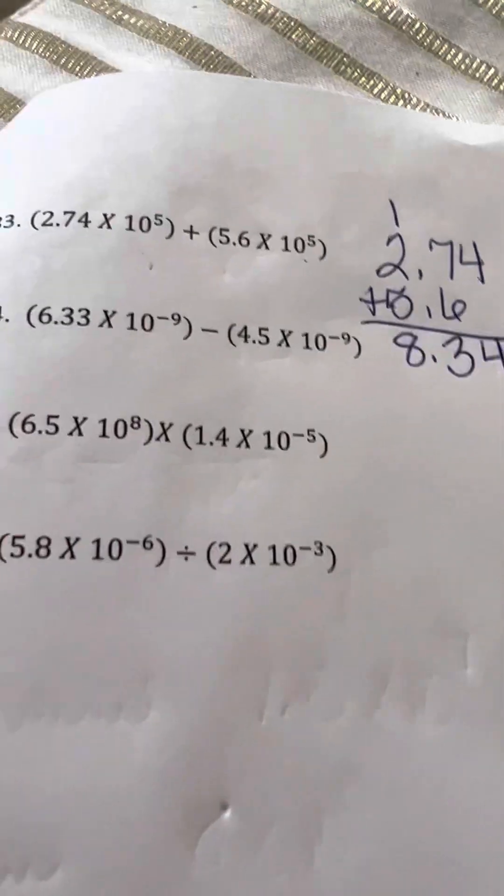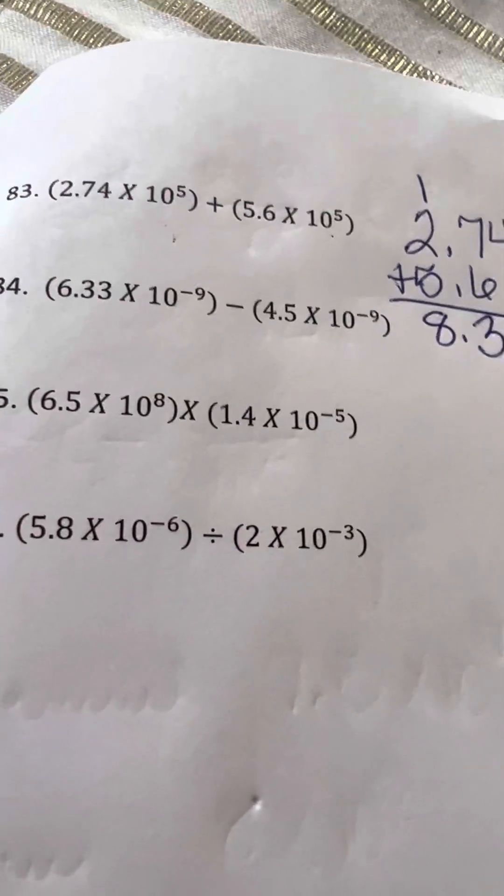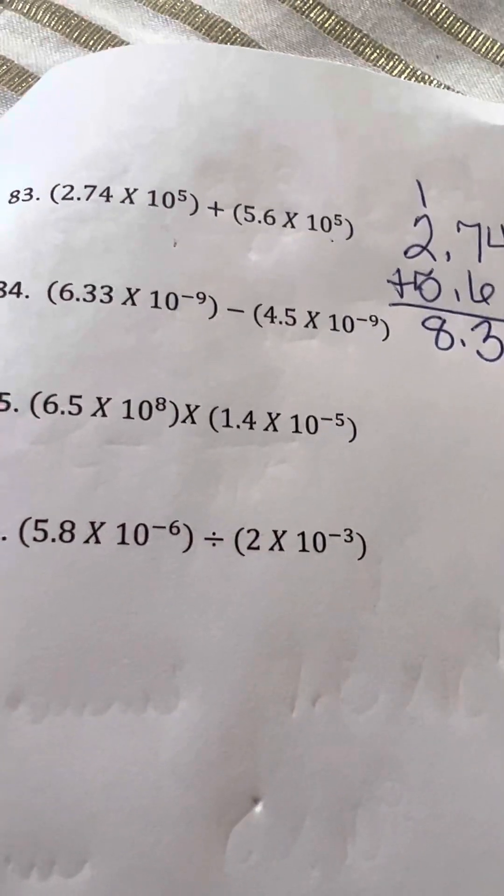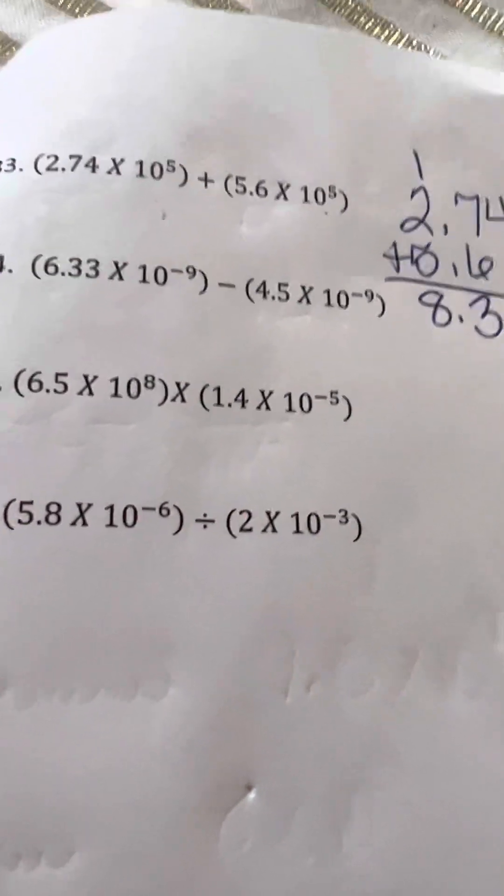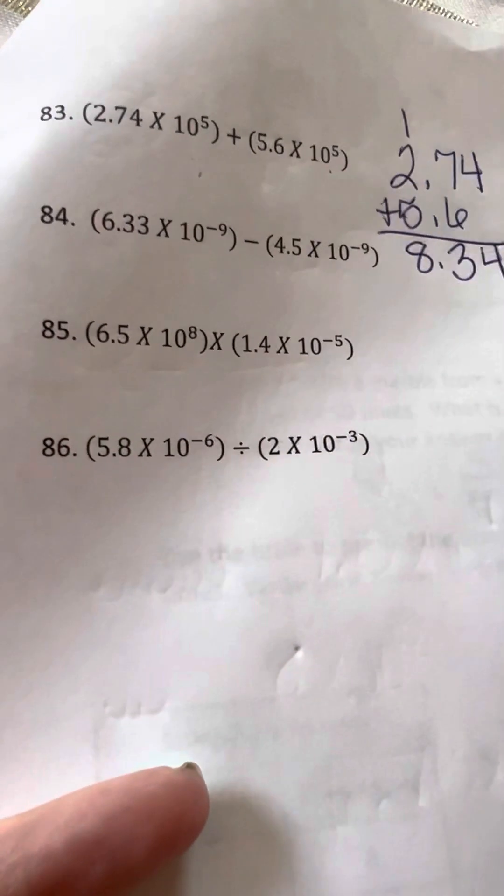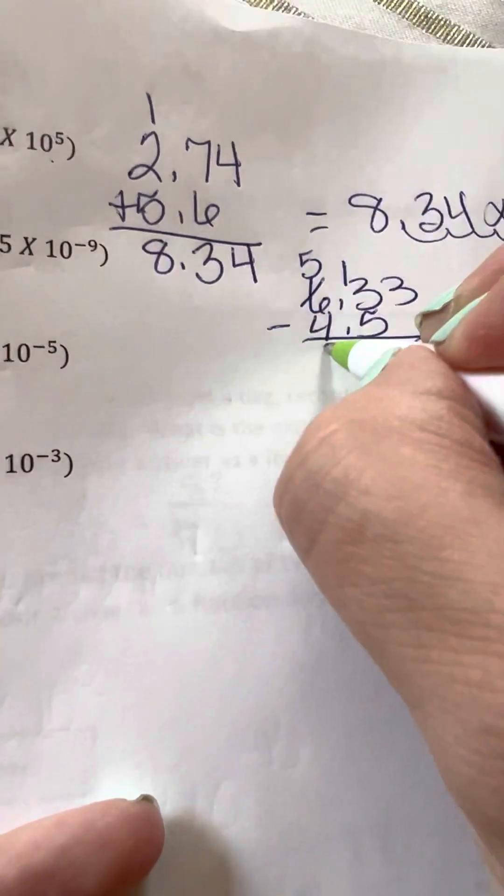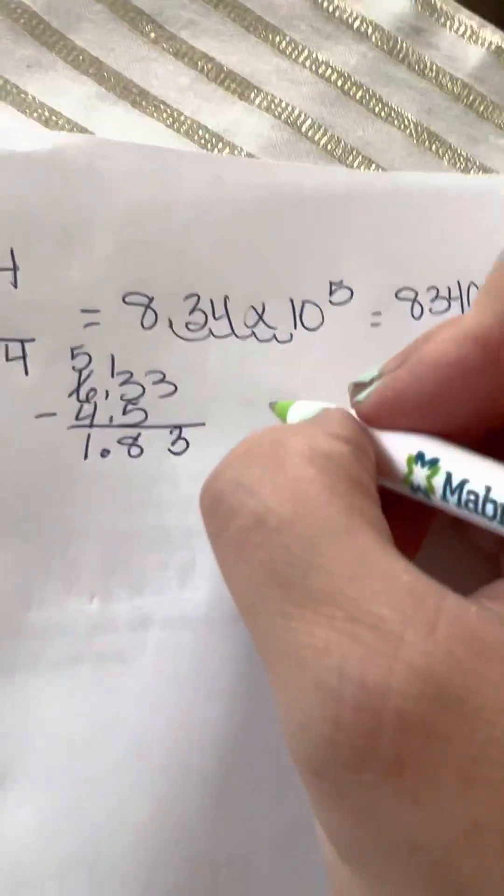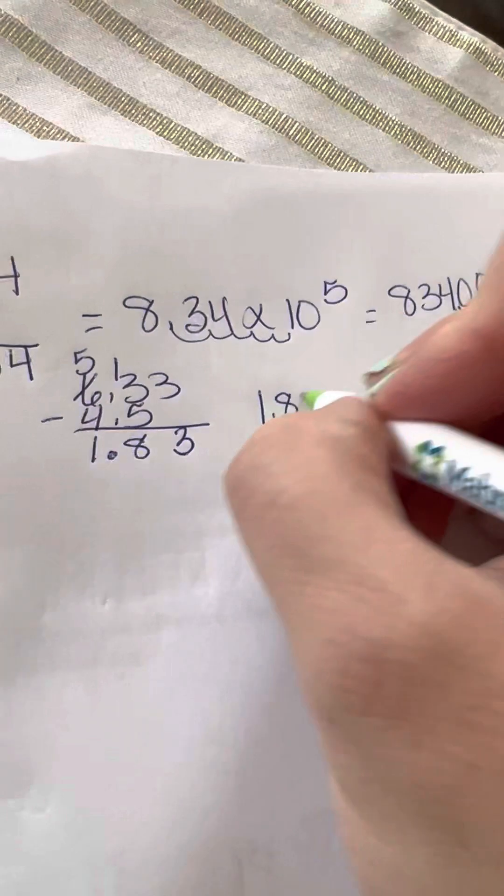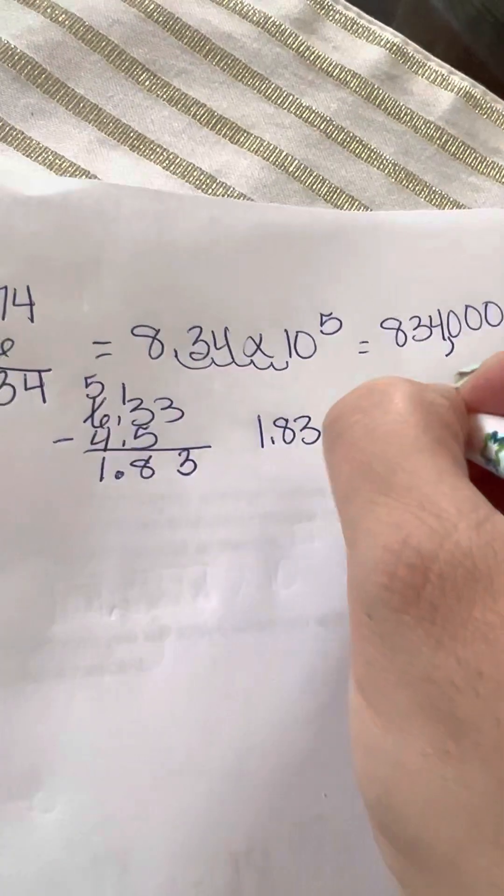This one, it's telling you to subtract. The exponents are the same. So here we have 6.33 minus 4.5. So that's going to end up being 1.83 times 10 to the negative 9th.